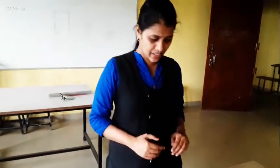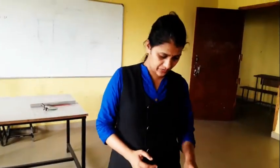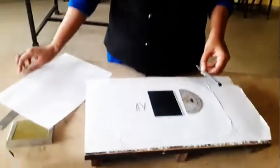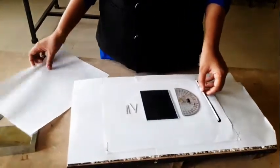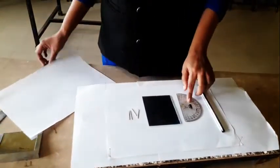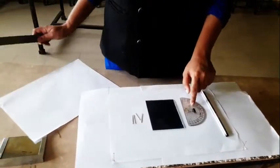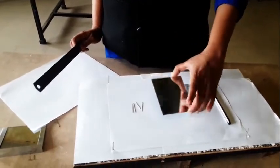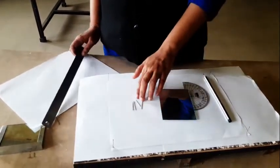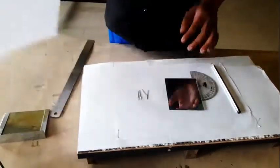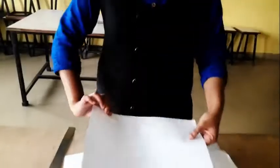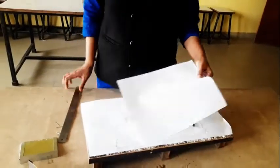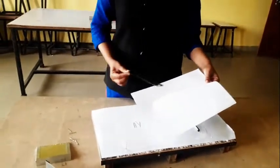The things needed for the activity are: a pencil, a protractor, a mirror — this is a plain mirror — pins (pink and black), blank paper, and a scale.